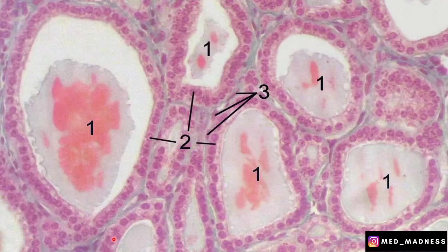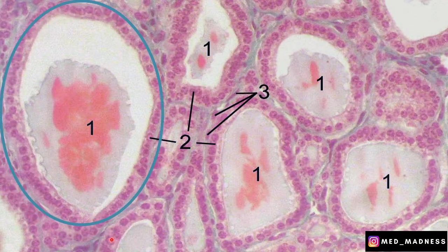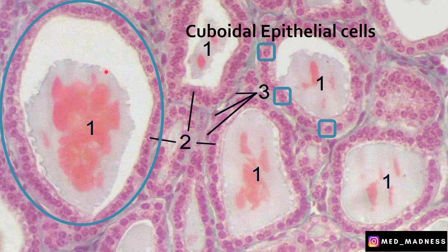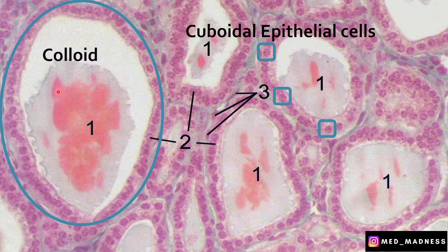Looking at this slide, the most distinguishing feature of the thyroid gland is the presence of follicles. There are many follicles here, and these thyroid follicles are lined by cuboidal epithelial cells that secrete T3 and T4 into the circulation. Note that the thyroid gland has a huge capacity for storing thyroid hormones inside the follicle, which we call colloid. So the colloid is present inside the follicle.